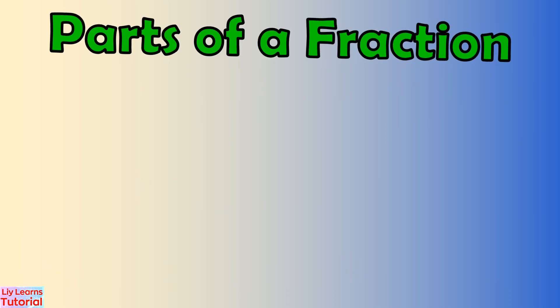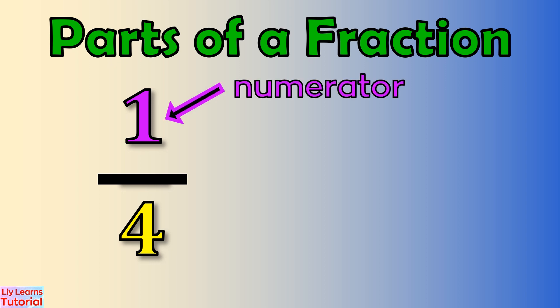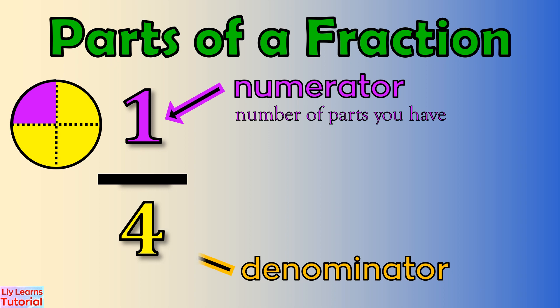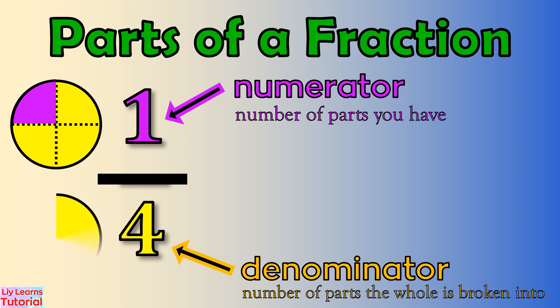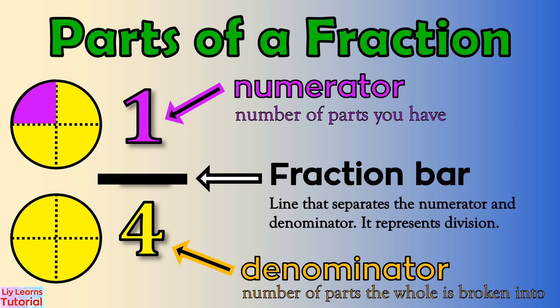These are the parts of a fraction. This is the numerator — it is the number of parts you have. This is the denominator — it is the number of parts the whole is broken into. This is the fraction bar. It separates the numerator and the denominator, and it represents division.